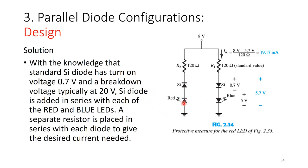So the red LED's effective reverse breakdown becomes 3 plus 20 equals 23 volts. The blue LED plus silicon path locks at 5.7 volts, well below 23 volts, so the red LED will never break down when the blue LED is conducting.